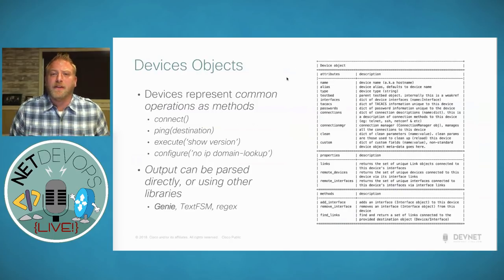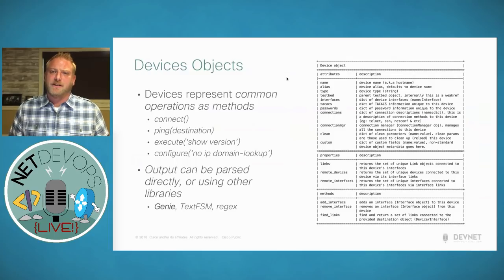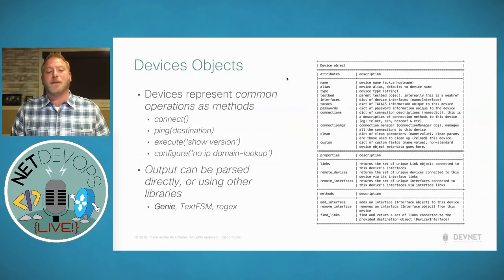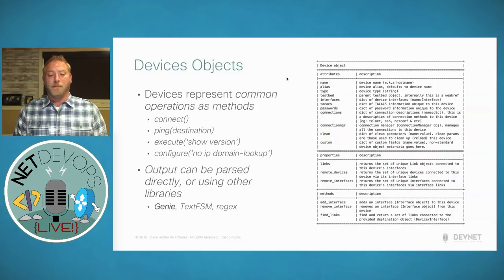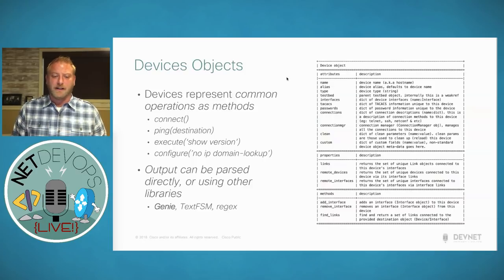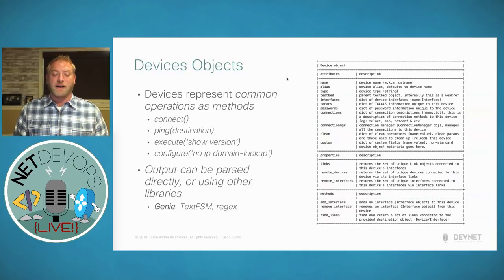Device objects are really where things get interesting. The testbed and topology information is your inventory — the devices are the actual thing we're going to interact with most commonly. Again these are Python objects, and those device objects represent the most common operations as methods. I may have a device object that I want to connect to, issue a ping from, execute a show command, or a configuration command. I can do that directly by calling the appropriate methods, then use the output to parse directly or use other libraries like Genie.